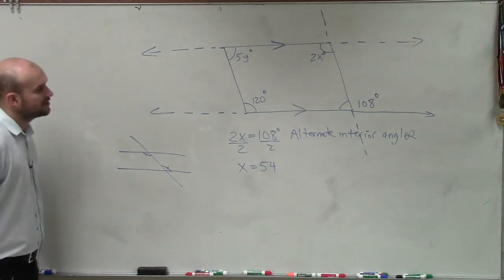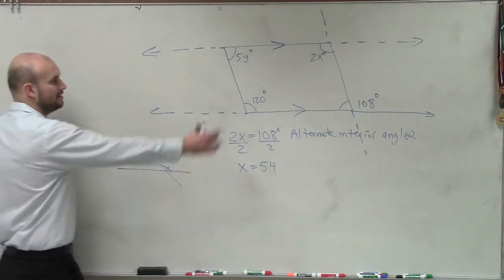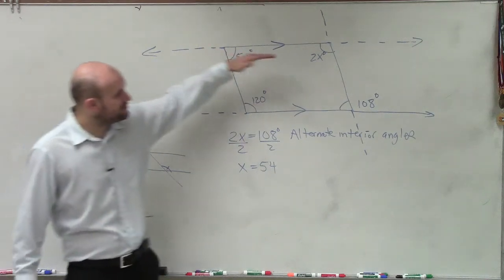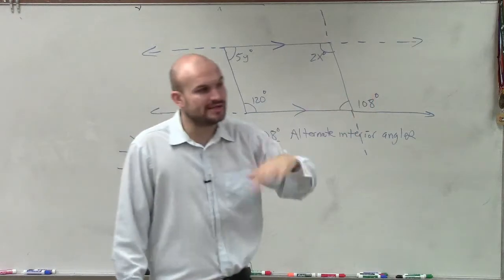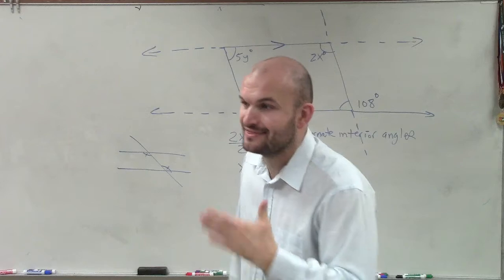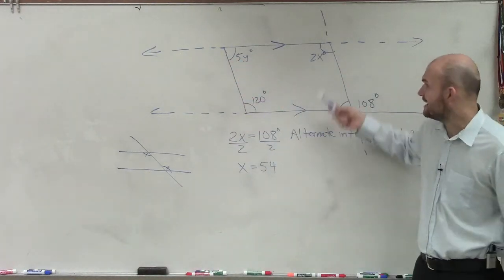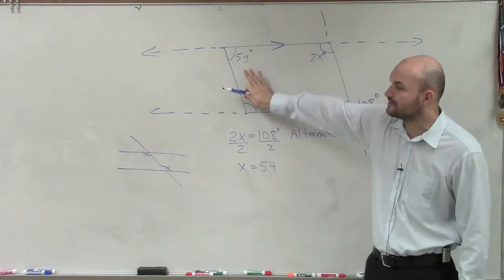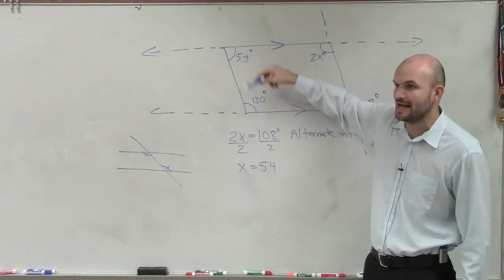So now let's go and look at another relationship that we have. Here, now we need to find the value of y. Now, we have two parallel lines, but we have two transversals. Remember, angles are only related to each other when they are labeled on the transversal. So since these angles are on two different transversals, I cannot relate them to each other. So I'm just going to have to look at these parallel lines and this transversal and see how are these two angles related.